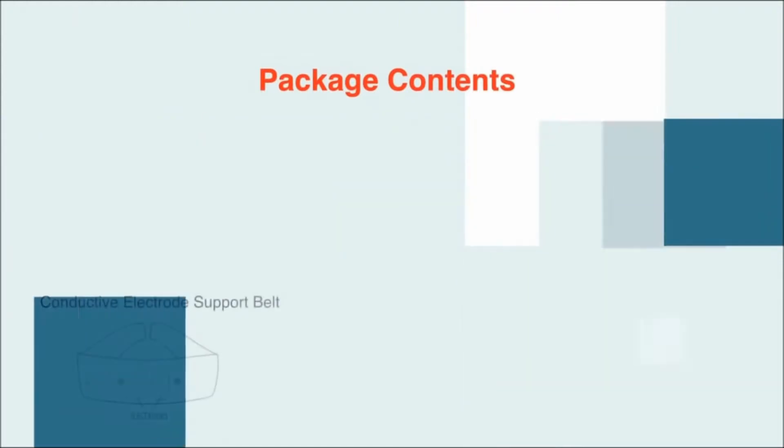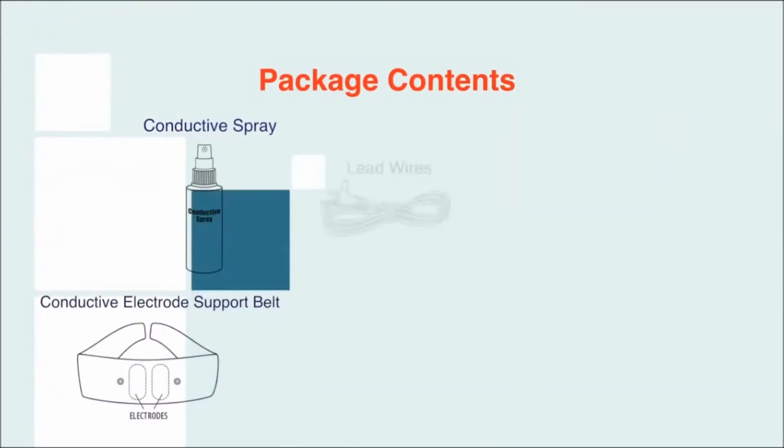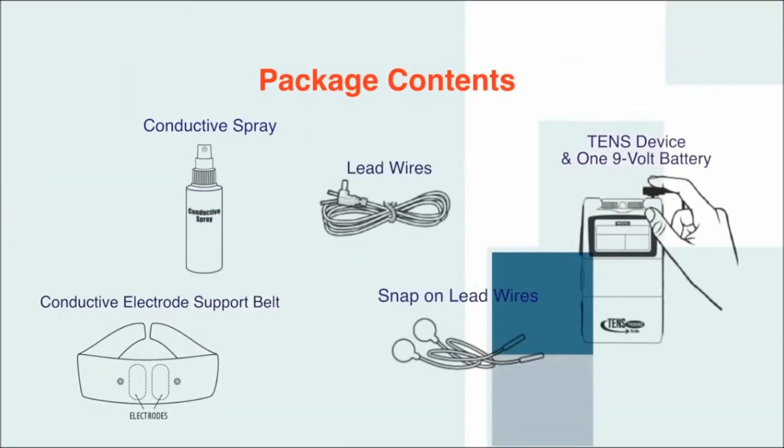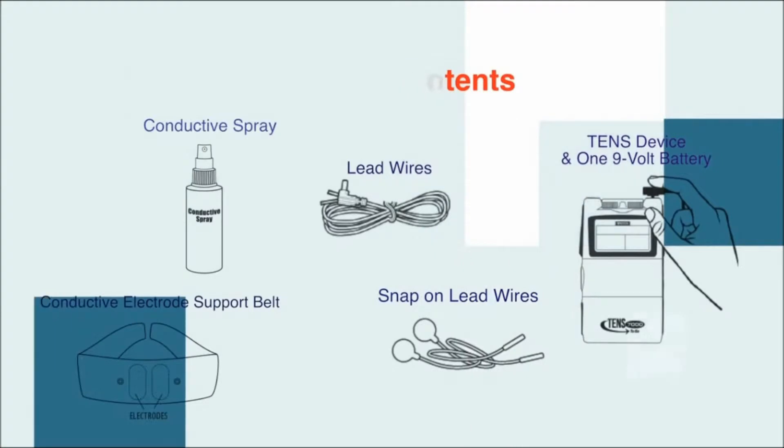Inside the package, you will find a conductive electrode support belt, a 2-ounce bottle of conductive spray, a pair of lead wires, snap-on lead wires, the TENS device, and one 9-volt battery.